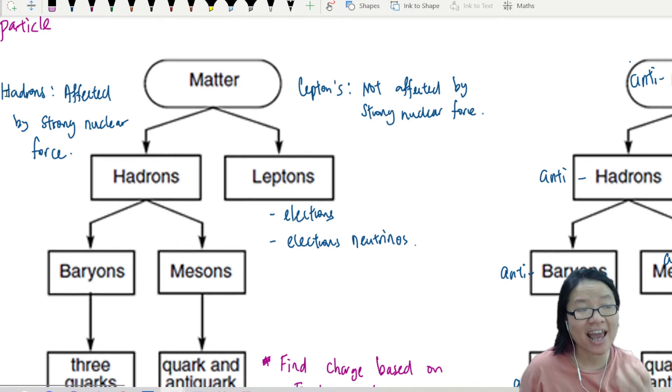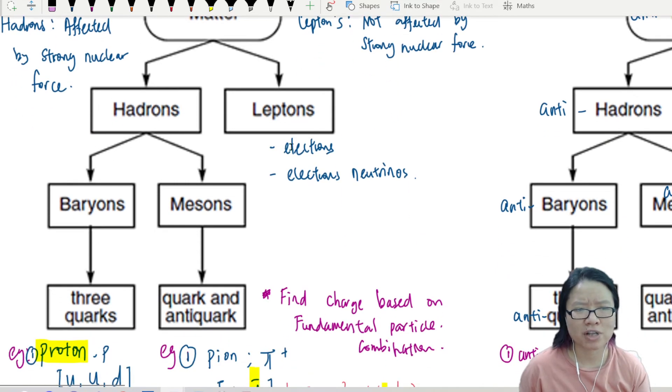heavy-ish, heavy particles is affected by strong nuclear force. Lepton is light particles. They are not affected by strong nuclear force. So leptons are electrons and neutrinos. Hadrons consist of baryons and mesons.